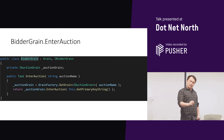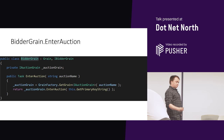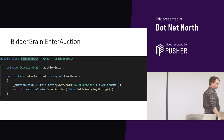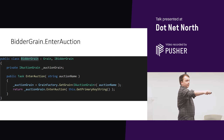So I fetch an auction grain of some type and say: auction grain, I'm going to enter your auction. But the auction needs to know who I am, so I tell it my ID using GetPrimaryKeyString. As a grain string key, that will return back — we'll call it Dan, because I'm called Dan. So we say: enter this auction for me. That will enter the auction, and we'll cover the auction grain code in a bit.